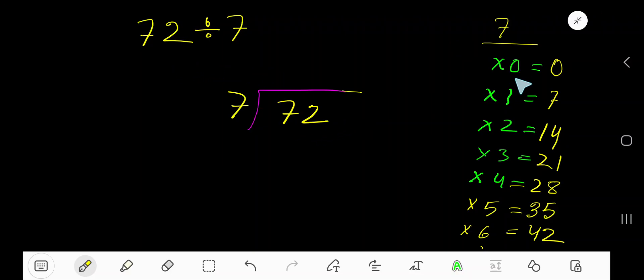72 divided by 7. 7 times 0 is 0, 7 times 1 is 7, 7 times 2 is 14, 7 times 3 is 21. To find the multiplication table of 7, just add 7 to the previous step: 0 plus 7 is 7.